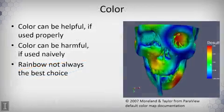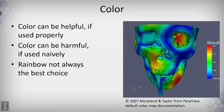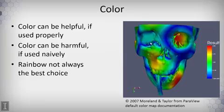Finally, color. Your choice of color can be important if used properly, but color chosen arbitrarily can be quite harmful. Rainbow is not the best choice. Here we're looking at a three-dimensional object using a rainbow map that has bright and dark spots in it. Those bright and dark spots can interfere with our perception of the three-dimensional shape, and the shading of the three-dimensional shape can interfere with our perception of the variable that's being mapped to color.